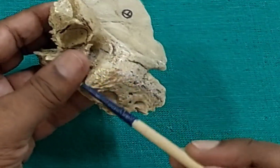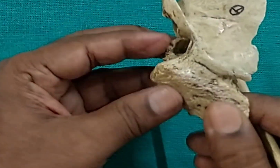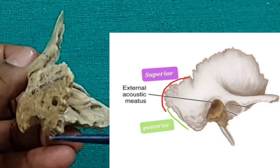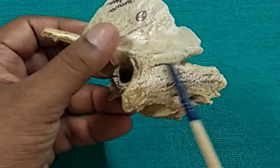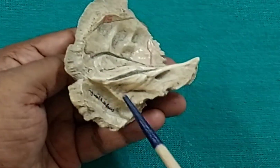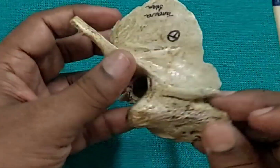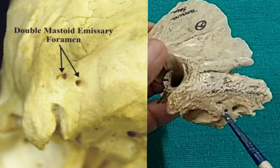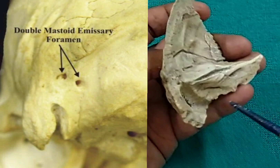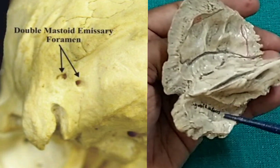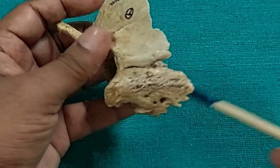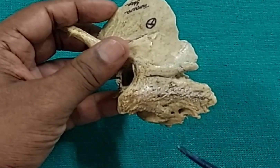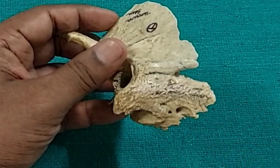Now come to the mastoid part. The mastoid part has two borders and two surfaces: a superior border, a posterior border, an external or lateral surface, and an internal or medial surface. There is one foramen on the outside called the mastoid foramen, through which an emissary vein passes, connecting the sigmoid sinus inside with the veins outside — specifically the posterior auricular vein. One artery may also pass through the mastoid foramen: a dural branch of the occipital artery.